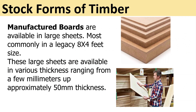Manufactured boards are available in large sheets. The most common size is the legacy eight-by-four feet sheet. These sheets are available in various thicknesses ranging from two or three millimeters up to approximately 50 millimeters.